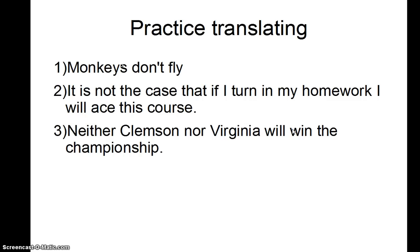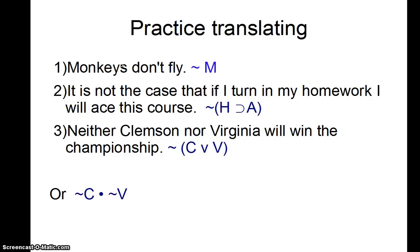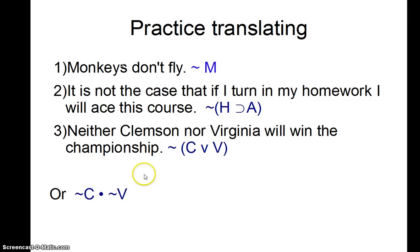See if you can translate these: 'Monkeys don't fly,' and 'it's not the case that if I turn in my homework, I'll ace this course.' The answers: not-M. For number two, the tilde applies to the whole conditional — not-(H horseshoe A) — because they're saying it's not the case that the whole if-then statement holds. For number three, 'neither Clemson nor Virginia will win the championship' is not-(C wedge V). You might also represent it as not-C and not-V, and these two are logically equivalent. We'll use that equivalence later in proofs.